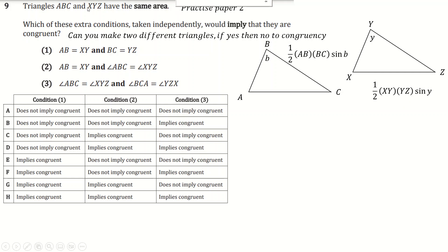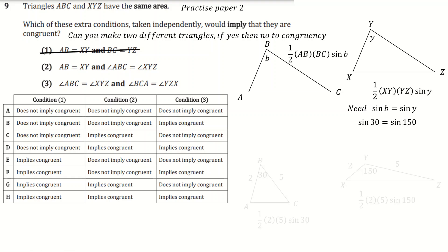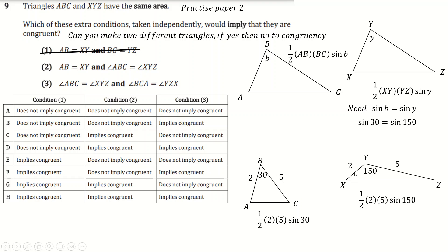But sin B equals sin Y doesn't necessarily mean B equals Y. This is a very common thing in trig — for Tumuwa you should know that sin 30 equals sin 150. So I can draw two triangles with the same two sides (say 2 and 5) but different angles, and they'll have the same area because half·2·5·sin 30 equals half·2·5·sin 150. These triangles are clearly not identical since one has a 30-degree angle and the other has a 150-degree angle. So this condition does not imply congruence.